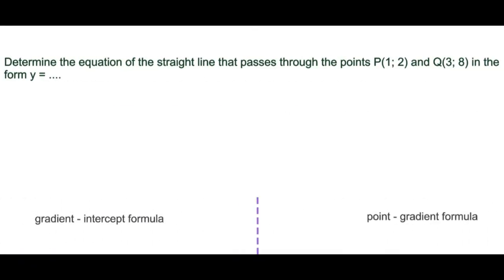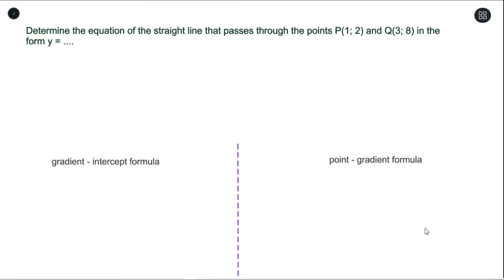The question says: determine the equation of the straight line that passes through the points P(1, 2) and Q(3, 8) in the form y = mx + c. The first thing we do in a question like this is determine the value of the gradient.